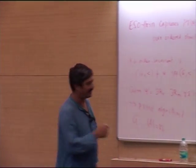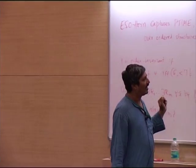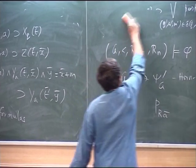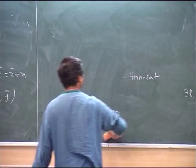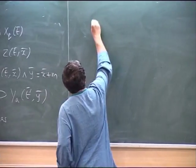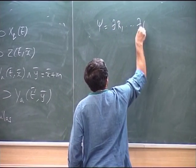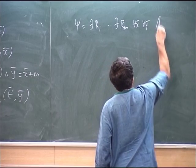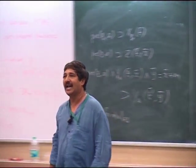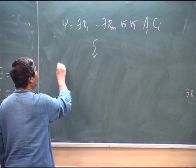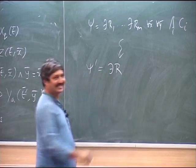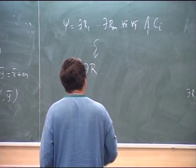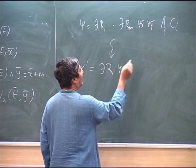There is one more thing I need to say. Once you have the formula in this form, you can do a little more. What I can do is transform this formula into an equivalent formula where I have only one relation symbol, over an expanded vocabulary. You need to expand the vocabulary and do some renaming of variables so that you can write it in this form.